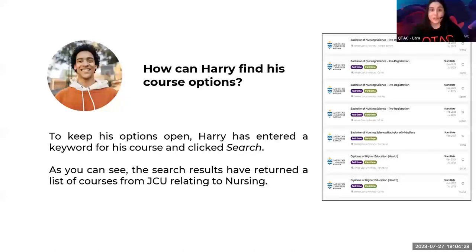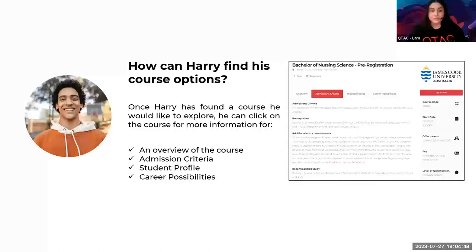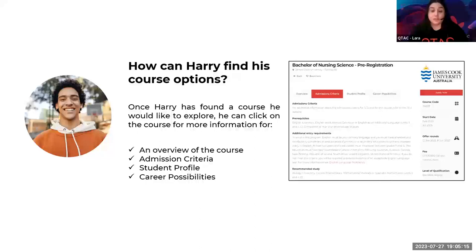From there, Harry can narrow down the course search by the course level — diploma, masters and bachelor — the duration, so part-time versus full-time, and the institution. It has returned a lot of different courses, all relating to nursing. Once Harry's found a course he'd like to explore more, he simply clicks on it. From there he'll be able to see an overview of the course and the admissions criteria. The admissions criteria is the most important part — it tells you everything you need to know to get into a particular course, including prerequisites, starting dates, and the offer round. On the right-hand side you'll also see a QTAC course code, which makes applying a lot easier.